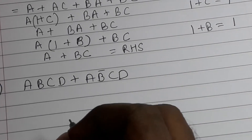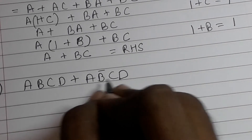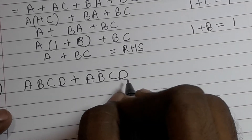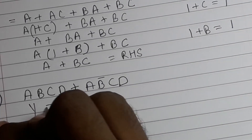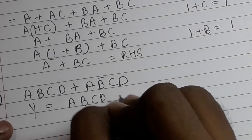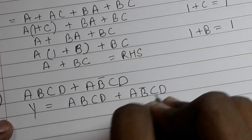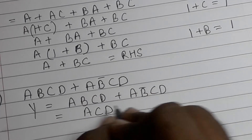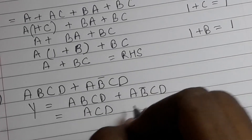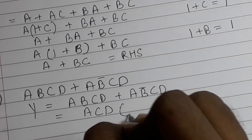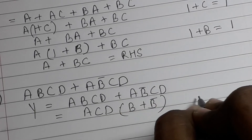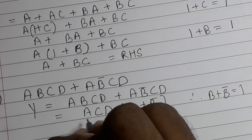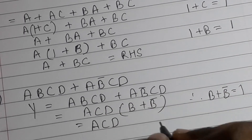Number 4: ABCD plus AB-bar CD. We have to reduce this. Taking ACD common, we can see B plus B-bar, which equals 1. Therefore the simplified form is ACD.